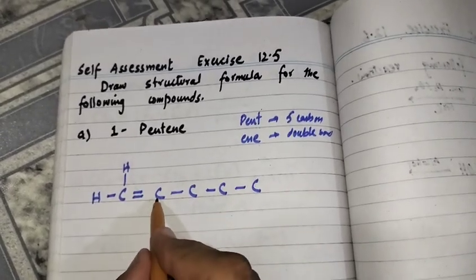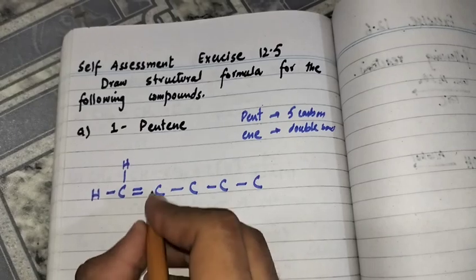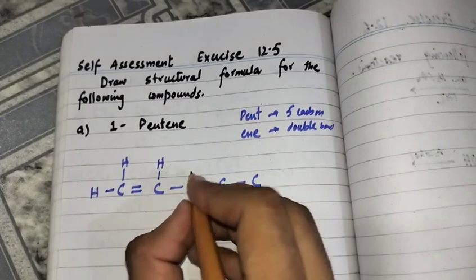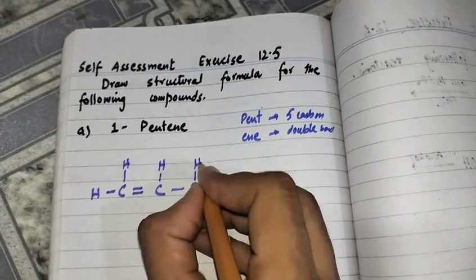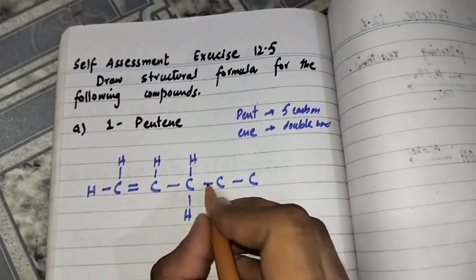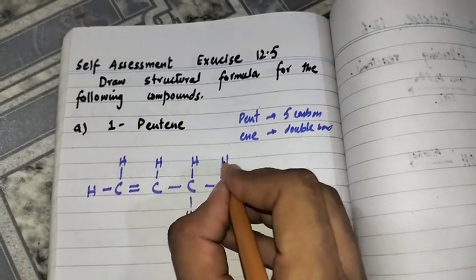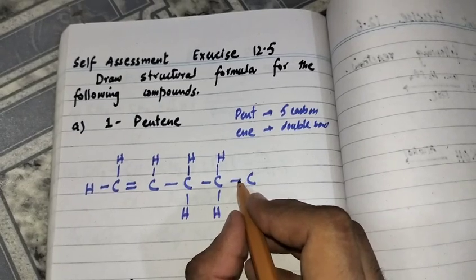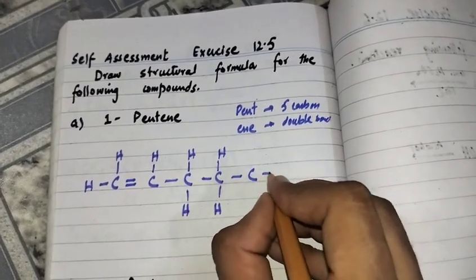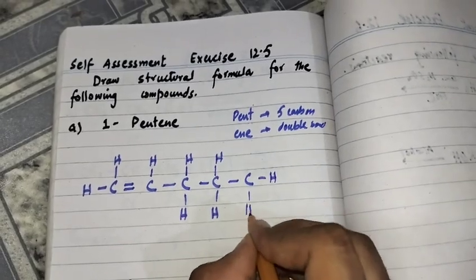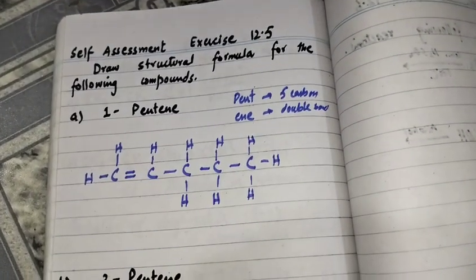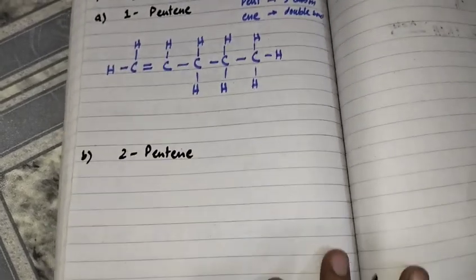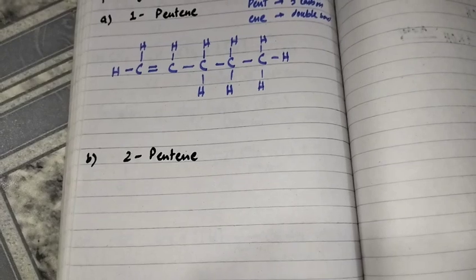This carbon has three bonds, so one remaining bond will be formed by a hydrogen atom. This carbon has two bonds, so the remaining two bonds will be formed by two hydrogen atoms. This carbon also has two bonds, so two hydrogen atoms are attached. The last carbon has only one bond with the adjacent carbon, so three hydrogen atoms complete its valency.